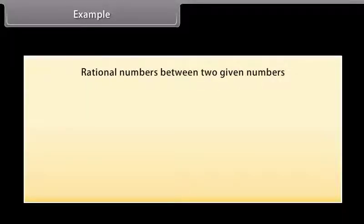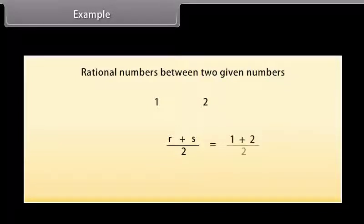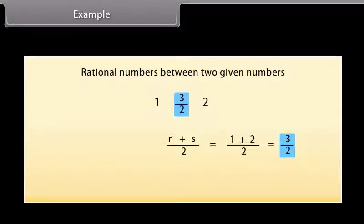Example. Let's now learn how to find rational numbers between two given numbers. The given numbers here are 1 and 2. Say 1 is R and 2 is S. To find the rational numbers between R and S, we have to add R and S and divide the sum by 2. So we get 1 plus 2 is equal to 3 by 2. Therefore, the rational number between 1 and 2 is 3 by 2.